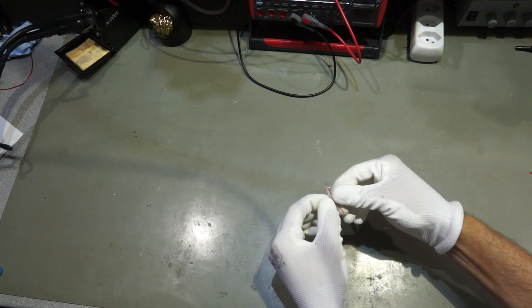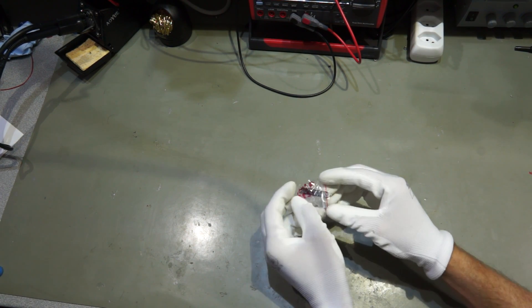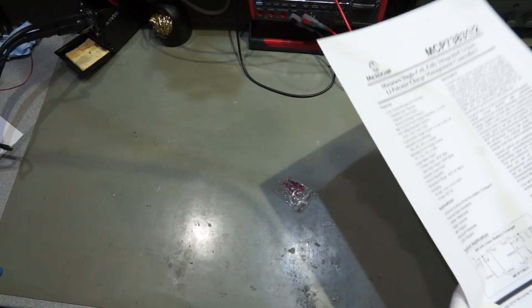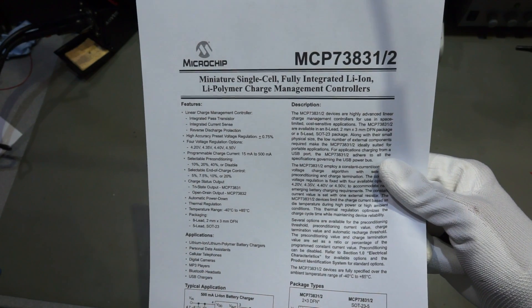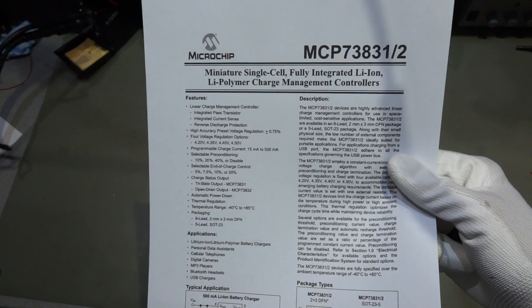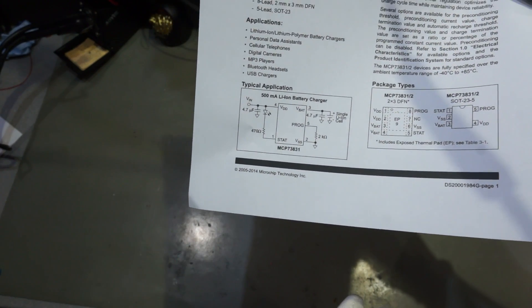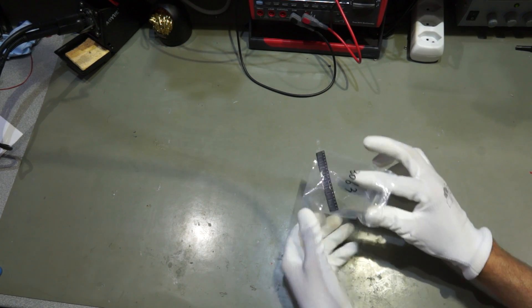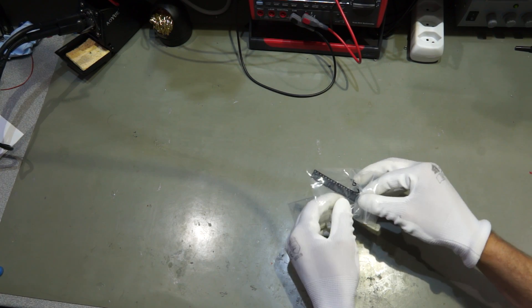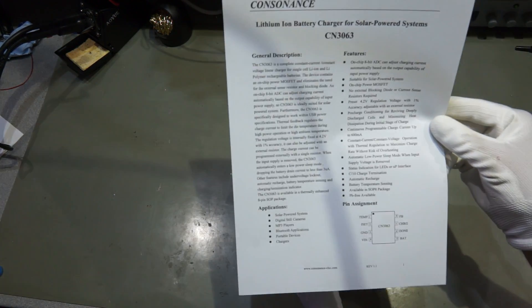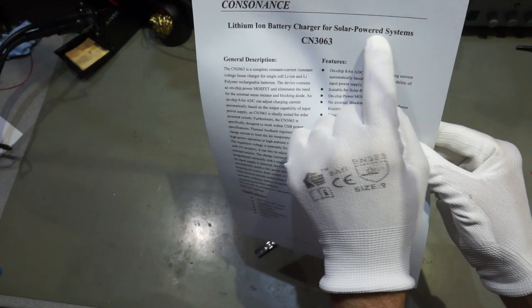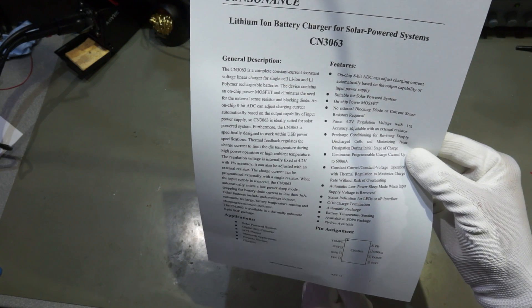The next one is even smaller, an incredibly small chip. You hardly can see it, but it is a MCP73831 and it is a LiPo charger management controller. It charges LiPo batteries and I might also use this for my tests with solar panels. And the third one is a dedicated chip for solar panels and LiPo charging called CN3063, for LiPo batteries and solar-powered systems.